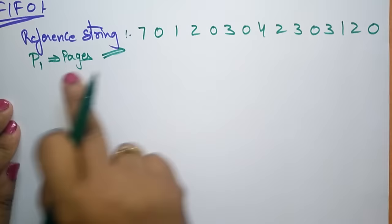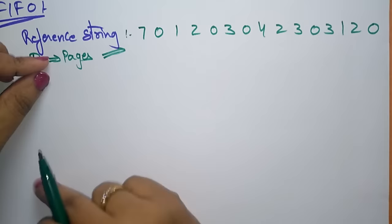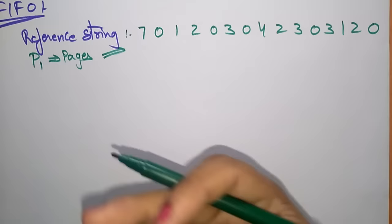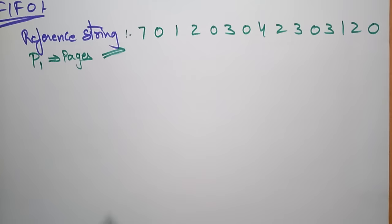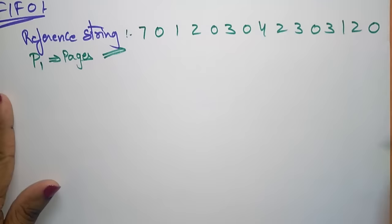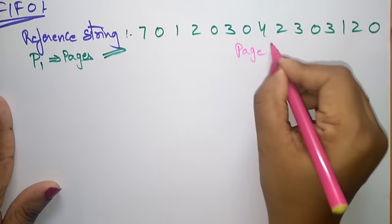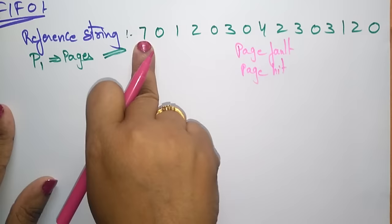These reference pages are what process P1 holds, and the CPU must bring them from disk. If page faults are more, the CPU time is wasted because the disk is slow compared to main memory. If the page is not present in main memory, that is called a page fault. If the page is already present, that is called a page hit.